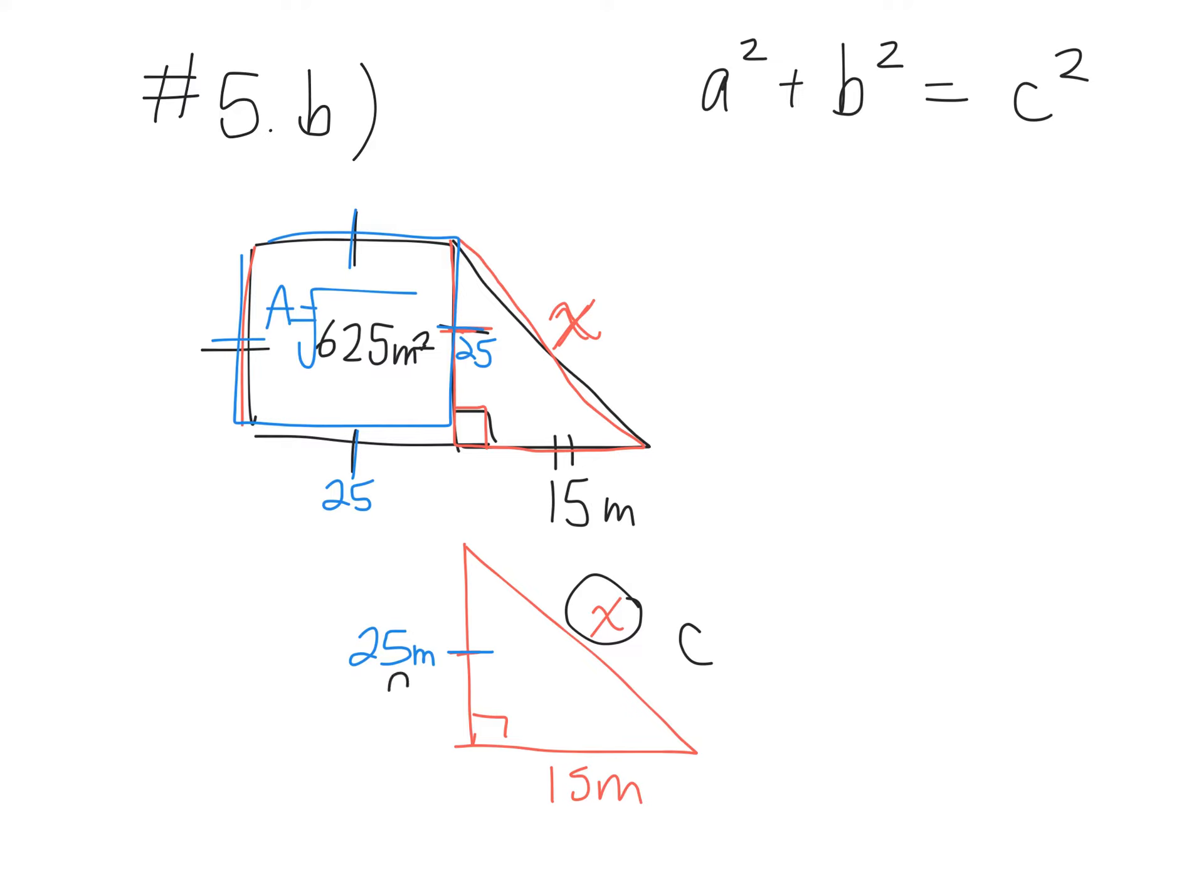So let's just call this A. We'll call this B. So we'll plug it in now. 25 squared plus 15 squared equals C squared. 625 plus 225 equals C squared. What is that simplified to? 850 is equal to C squared. How do I find C?